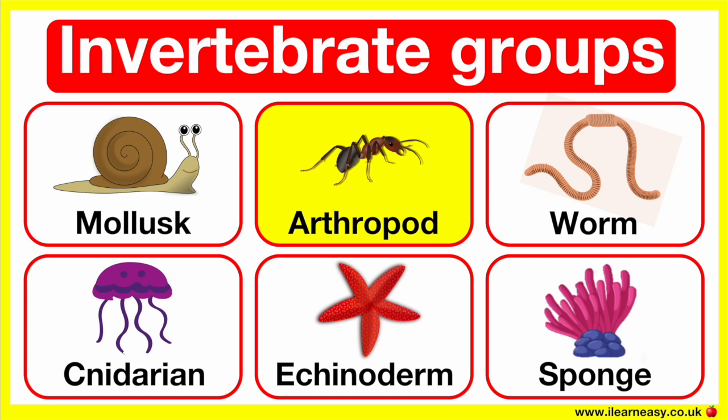Arthropods can have different numbers of jointed legs. Some have six, some have eight, some have ten, and some have even more than ten. They also have an exoskeleton.